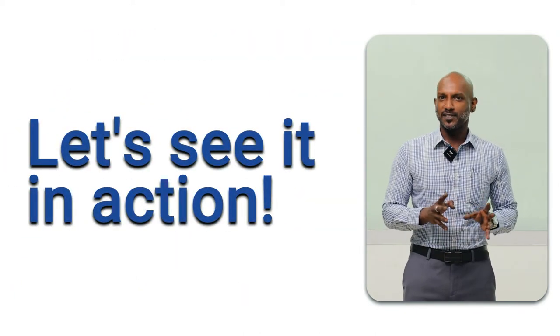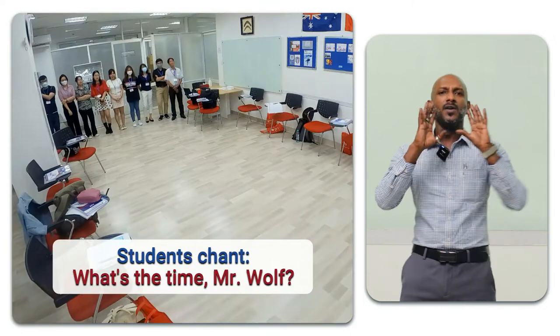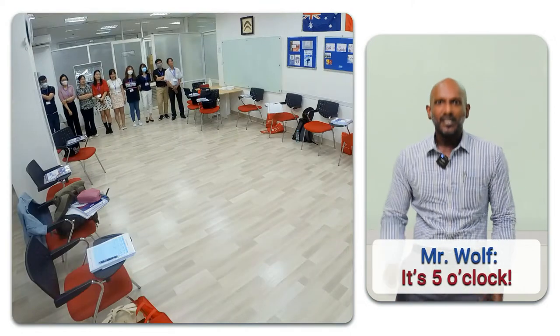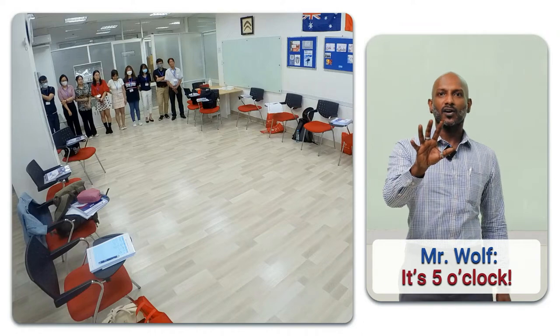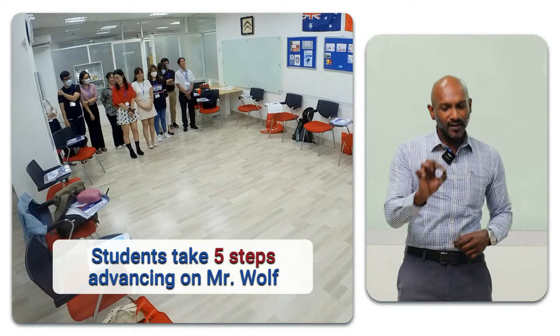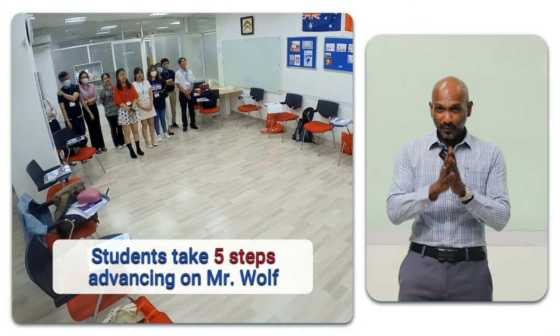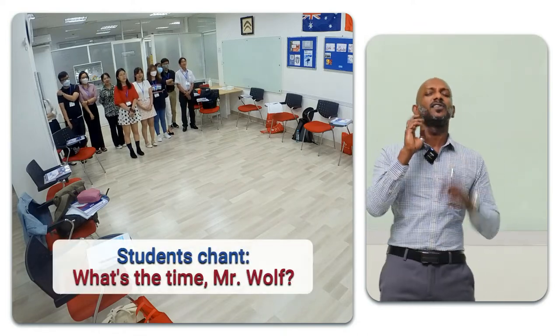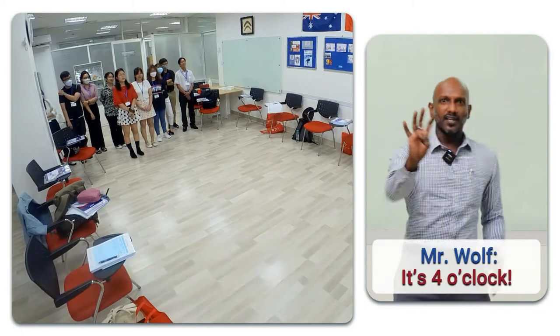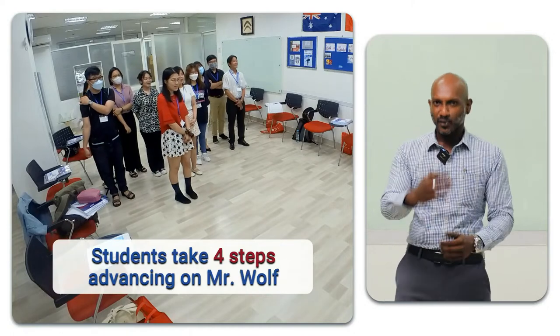Now that Mr. Wolf is ready to commence the game, he will turn his back to the students. The students chant, 'What's the Time Mr. Wolf?' Mr. Wolf should turn and say, 'It's 5 o'clock,' and turn back. The students must now take that number of steps, advancing closer and closer on Mr. Wolf. Keep going — 'What's the Time Mr. Wolf?' — 'It's 4 o'clock.' Again, the students take that number of steps closer and closer to Mr. Wolf.